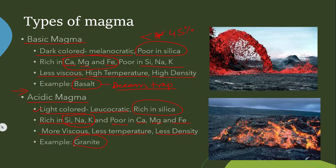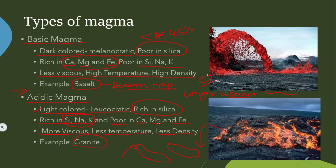One more important point: basic magma can travel for longer distances because it has very low viscosity — it can travel like water, potentially hundreds of kilometres. But acidic magma is more viscous and therefore cannot travel for longer distances. Wherever it erupts from a volcano, it can travel only a few kilometres, whereas basic magma can travel hundreds of kilometres because of its low viscosity.